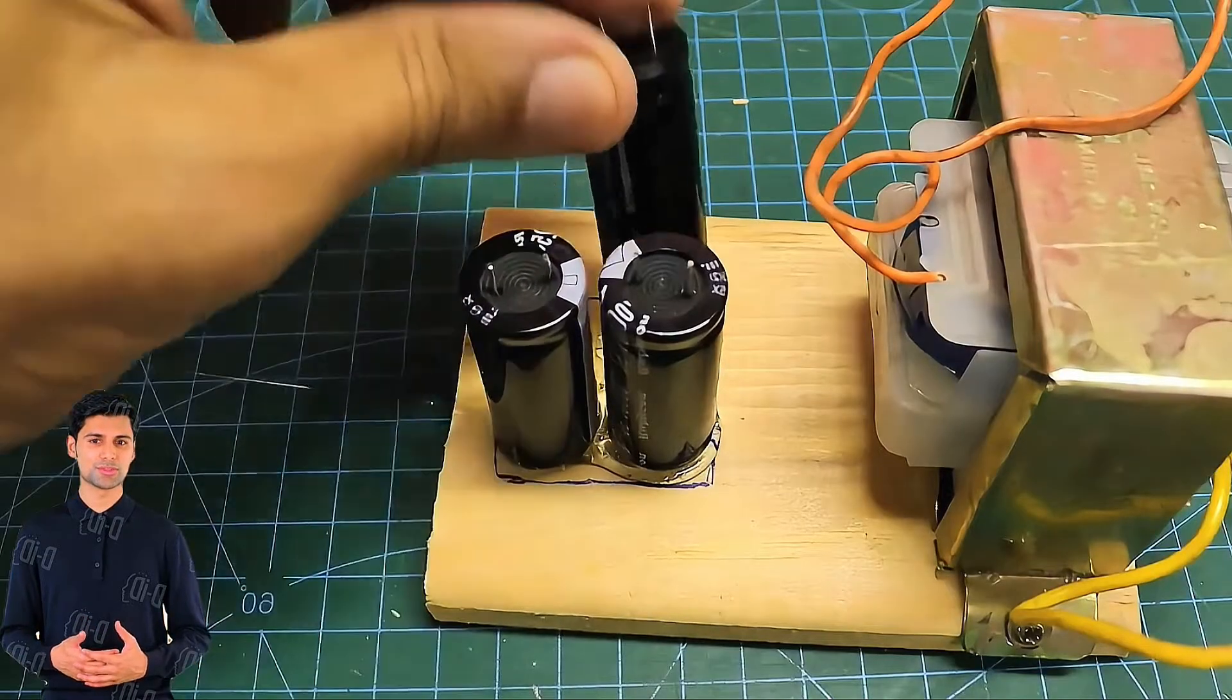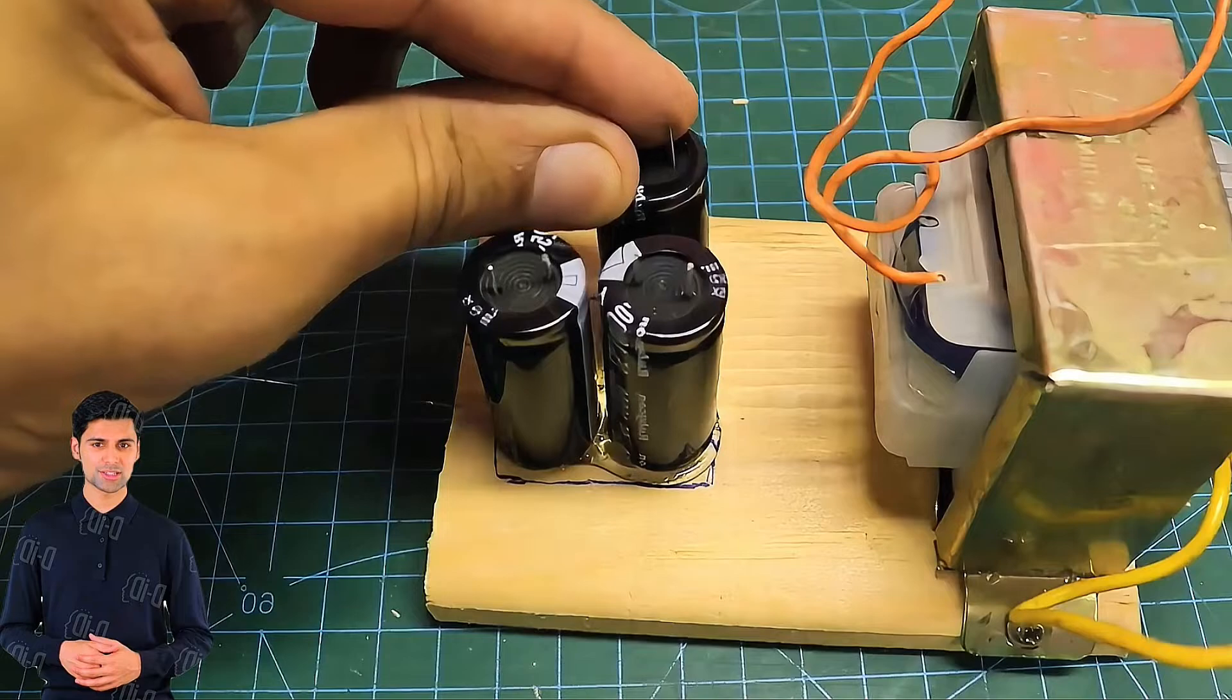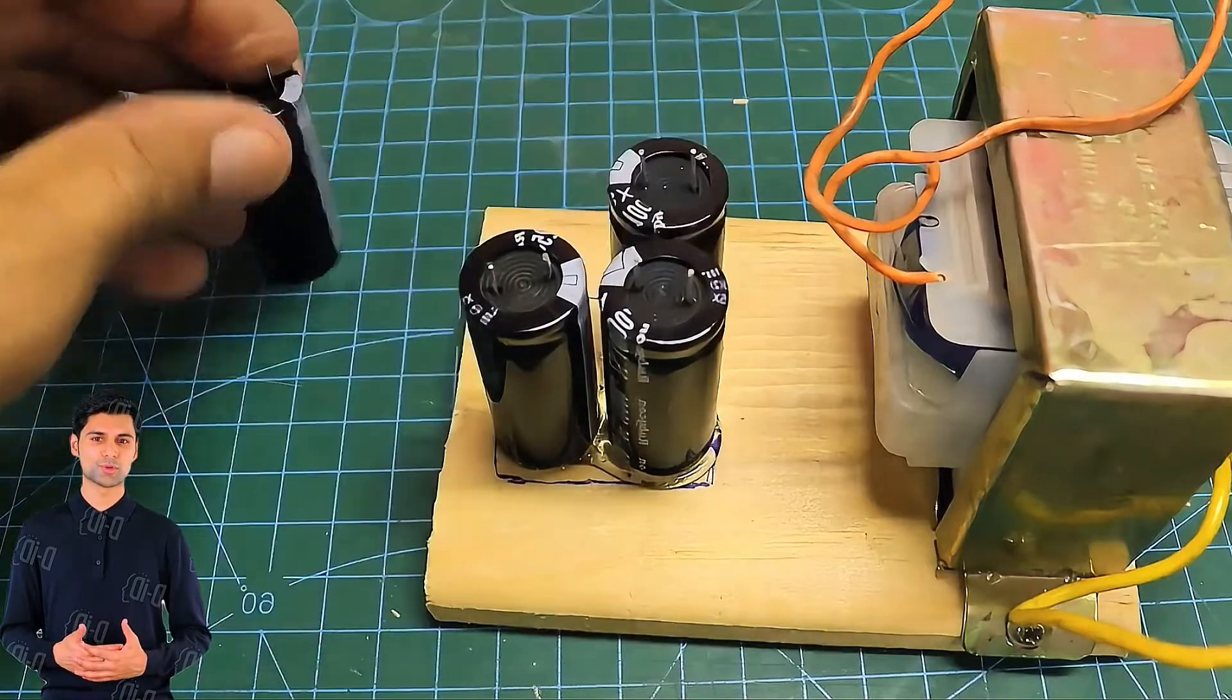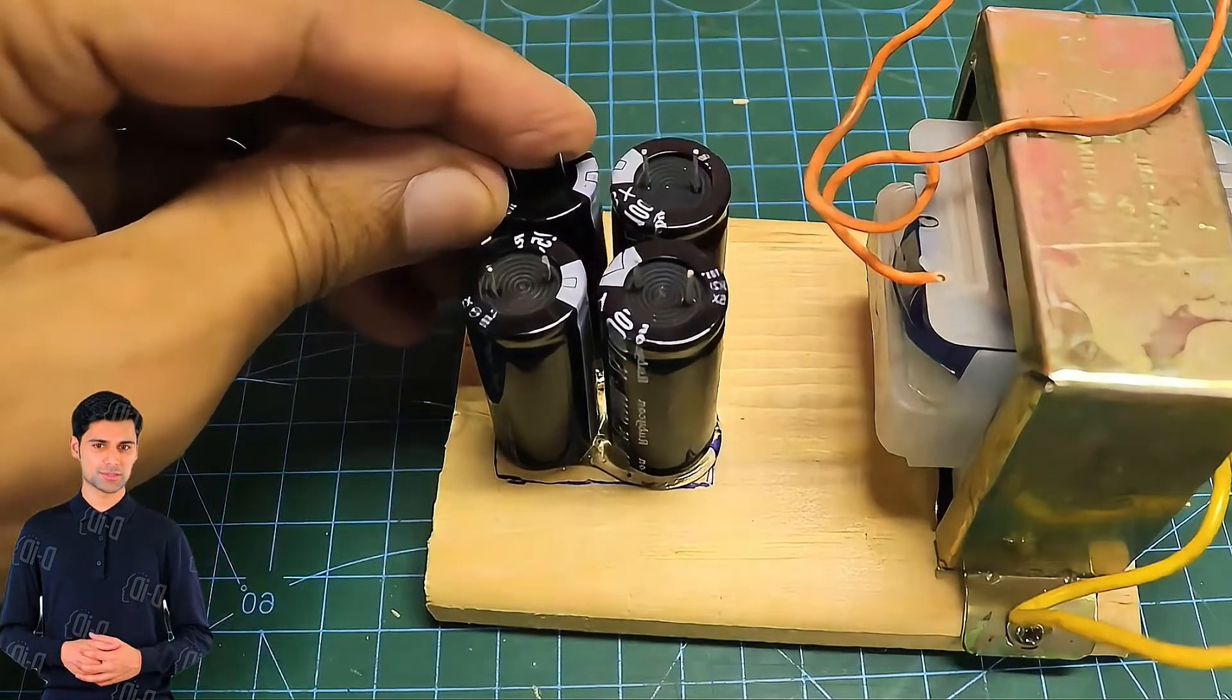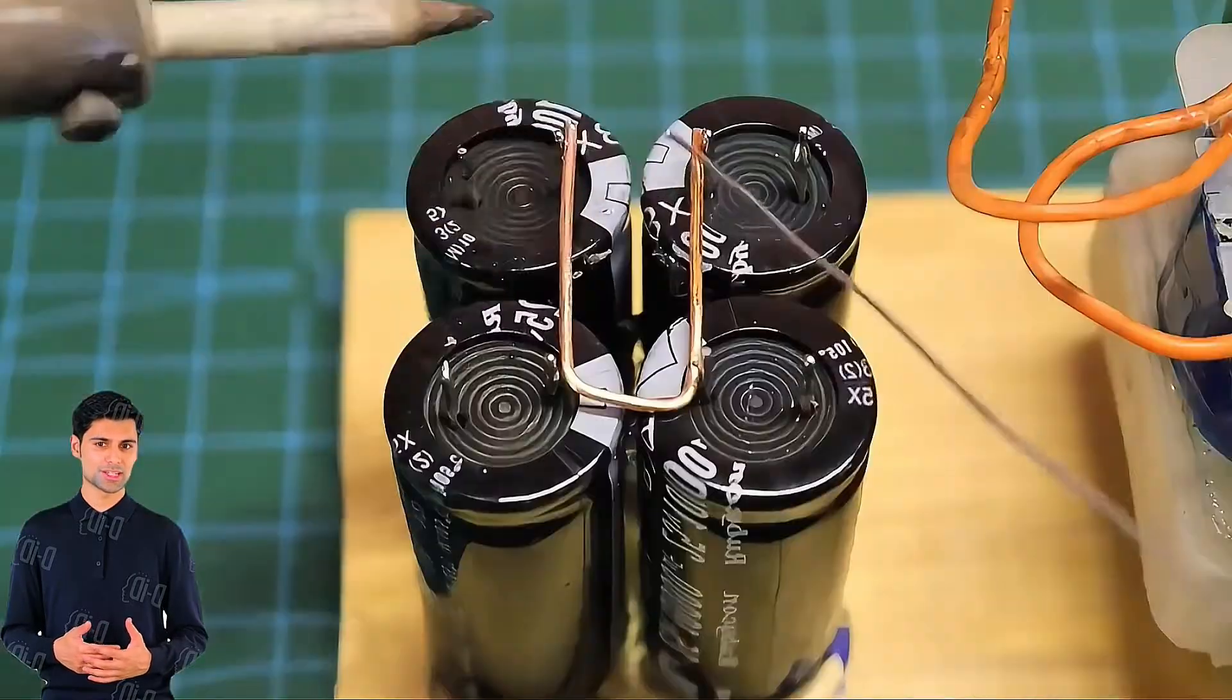We will connect these four capacitors in parallel to increase the overall capacity. The bigger the capacitance, the bigger the discharge current. Thicker nickel strips can be welded when welding lithium batteries.